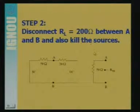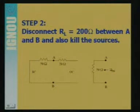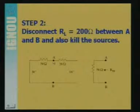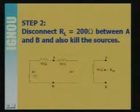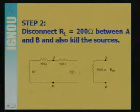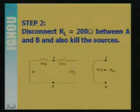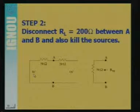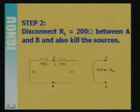Just like Thevenin's theorem where we find Rth, the procedure for finding Rth or R Norton is: first, make the terminal AB open circuit where the 200 ohm resistance was connected, and replace all sources by their internal resistance. The voltage source is replaced by a short circuit, and the current source is replaced by an open circuit. The internal resistance of an ideal current source is infinity, hence open circuit; the internal impedance of an ideal voltage source is zero, hence short circuit. This gives the impedance as seen from the load terminal AB.